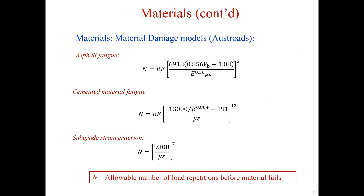For these materials and at critical locations, there are three corresponding material damage models: the asphalt fatigue, the cemented material fatigue, and subgrade rutting and loss of surface shape.